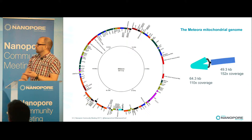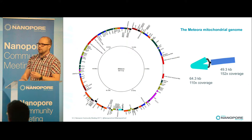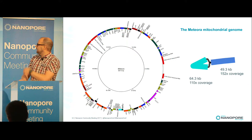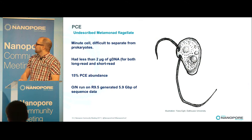We were also able to pull out the mitochondrial genome, which was essentially complete. However, when looking at the assembly graph there appears to be a large inverted repeat, so we haven't obtained a fully closed circular assembly. The coverage is also a bit unusual — you would expect a two-to-one ratio if there were a large inverted repeat, but it's not exactly that.